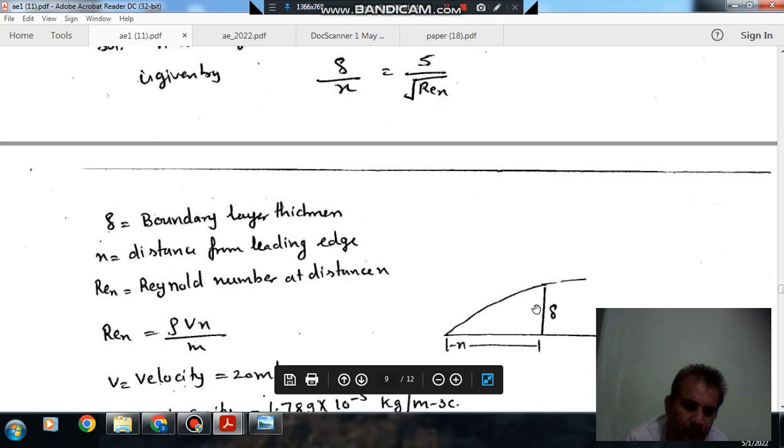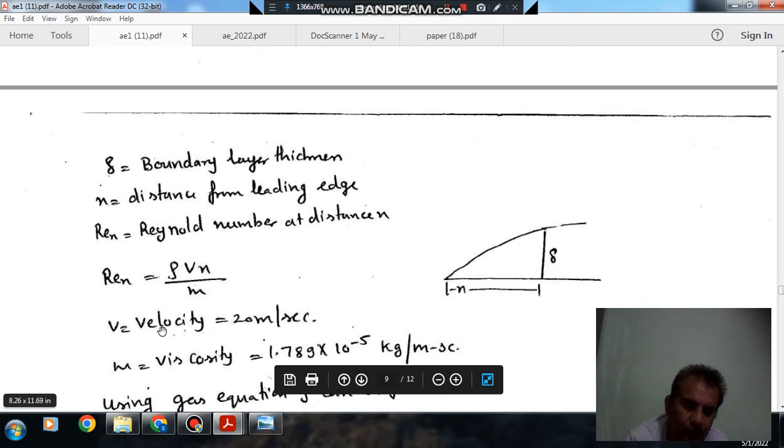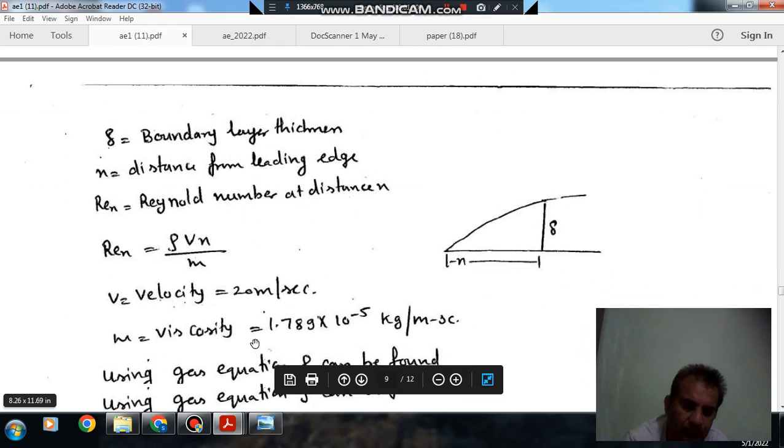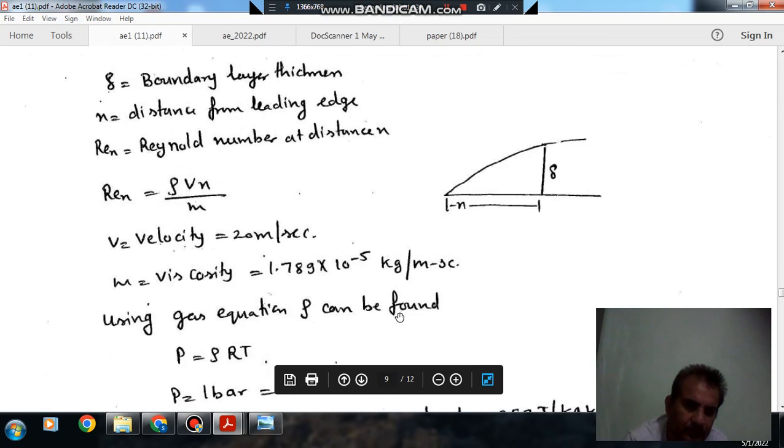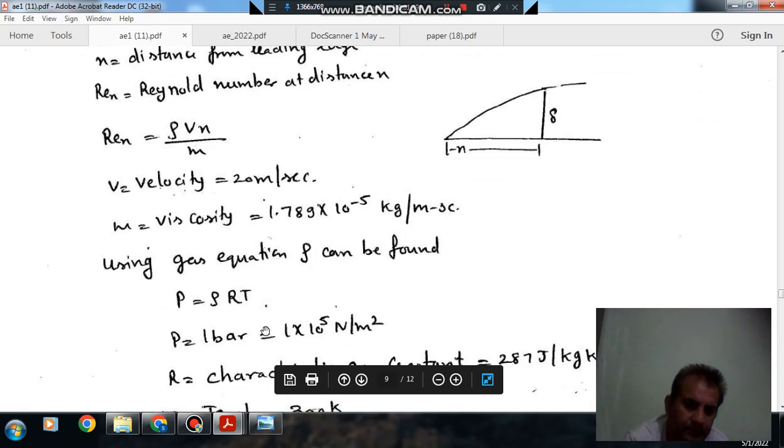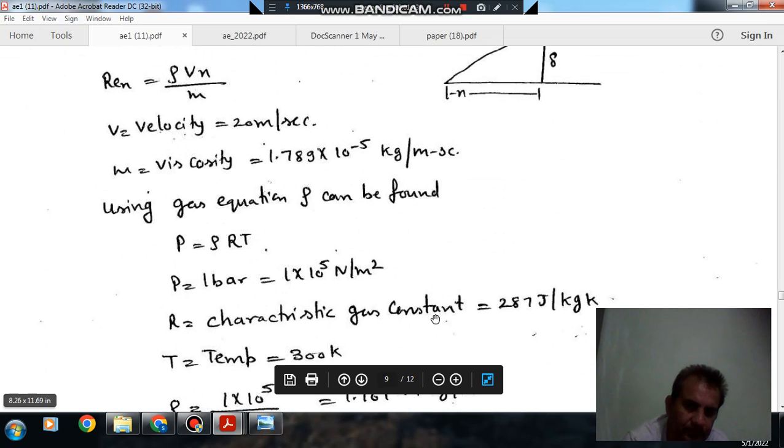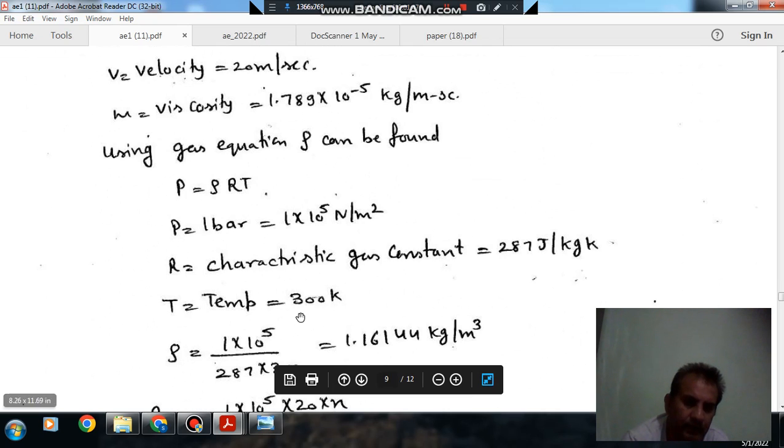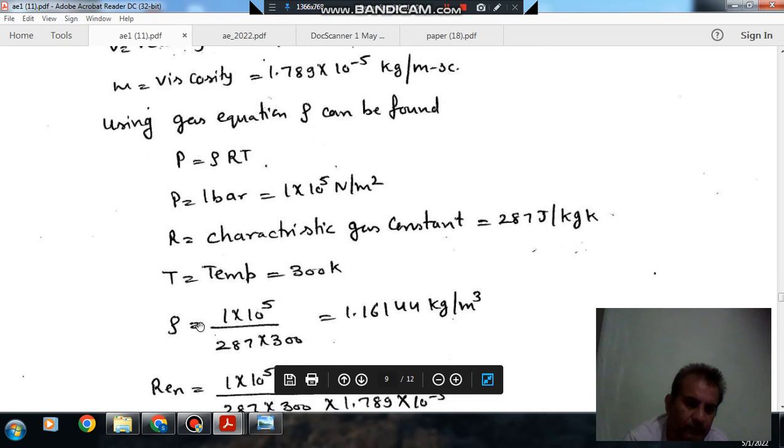The Reynolds number Rex is rho Vx by mu. V is 20 meter per second, viscosity is 1.789 times 10^-5 kg per meter per second. Using gas equation, P equals rho RT, so P is 1 bar which is 10^5 newton per meter square, R is 287 joule per kilogram per Kelvin, and temperature is 300 Kelvin.